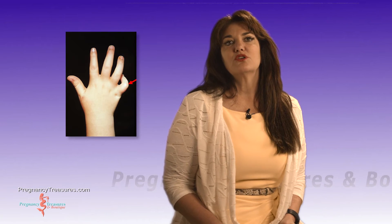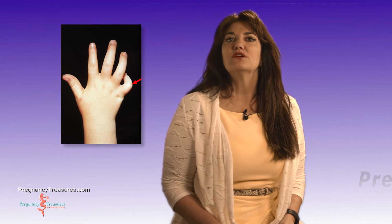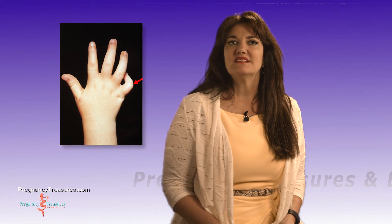Camptodactyly usually occurs in the little finger — that is the finger most commonly involved — and it's at the middle joint. The little finger will then be permanently bent if you have camptodactyly.